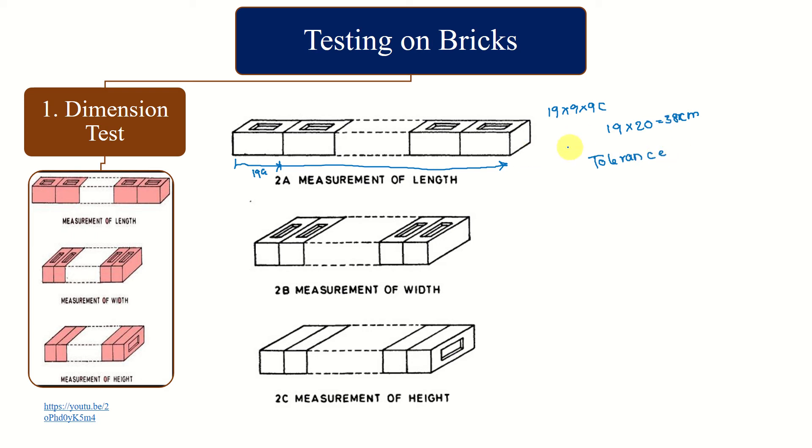How much deviation is tolerated from particular class of the brick. We have to check whether there is any deviation and how much is allowed. In the similar way, cumulative width and cumulative height will also be measured. You can see the frog here - this is length direction, this is width, and this is height.